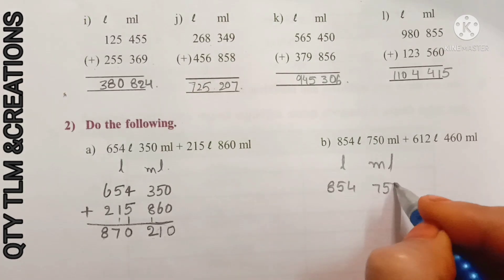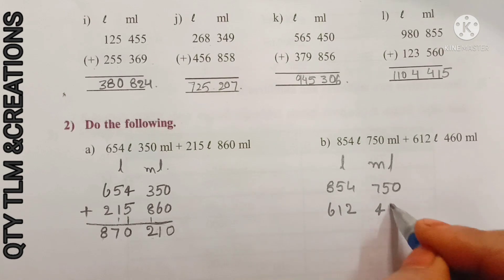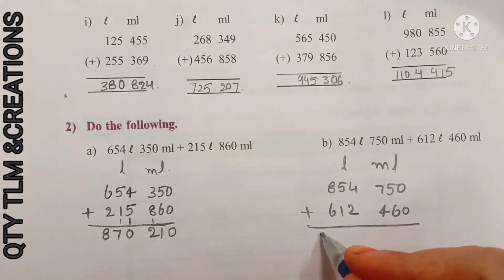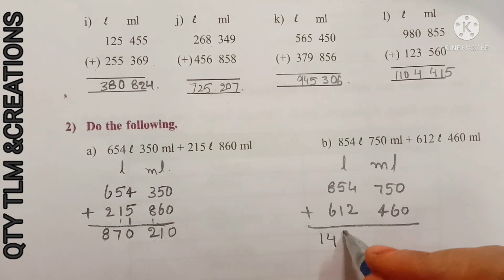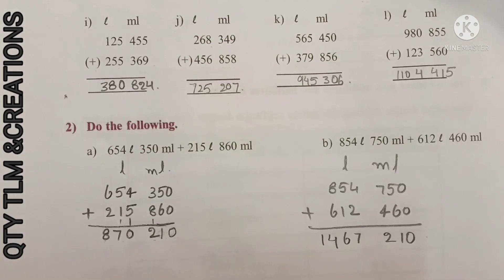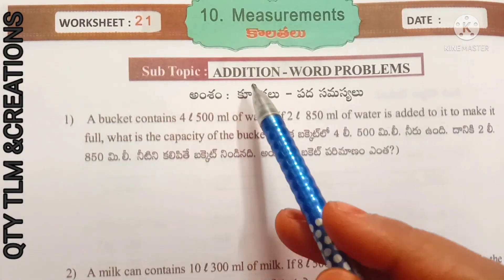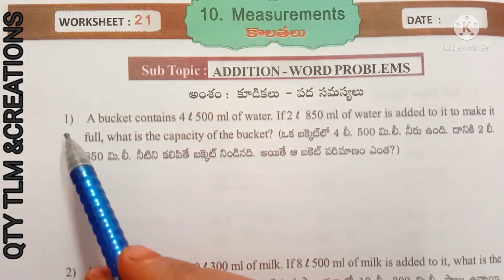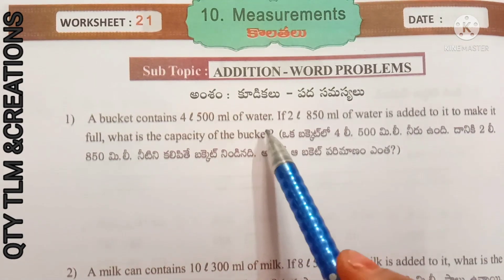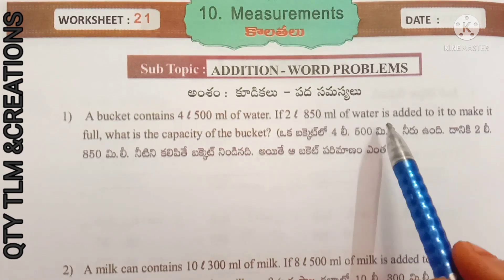Next, B: 854 liters 750 milliliters plus 602 liters 460 milliliters, we get 1467 liters 210 milliliters. Next, worksheet number 21, subtopic addition word problems. First question: a bucket contains 4 liters 500 milliliters of water. If 2 liters 850 milliliters of water is added to it to make it full, what is the capacity of the bucket?